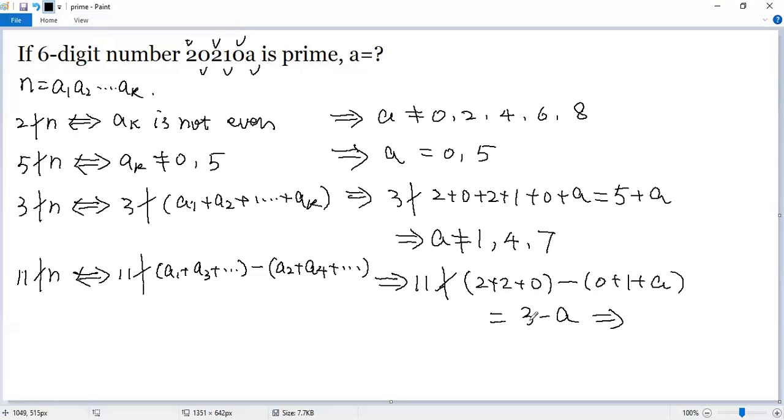That means A cannot be 3. So among the 10 digits 0, 1, 2, 3, 4, 5, 6, 7, 8, 9, only 9 is possible. So let's say A equals 9.